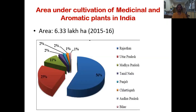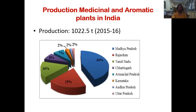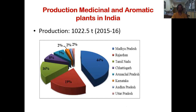Regarding area under cultivation of medicinal and aromatic plants, around six lakh hectares have been cultivated in our country. State-wise, Rajasthan is the major player with about 56% of the area, followed by Uttar Pradesh, Madhya Pradesh, Tamil Nadu, Punjab, Chhattisgarh, Andhra Pradesh and Bihar. In terms of production, around 1,022 metric tons was produced in 2015-16, with the major source from Madhya Pradesh, followed by Rajasthan, Tamil Nadu, Chhattisgarh, Arunachal Pradesh, Karnataka, Andhra Pradesh and Uttar Pradesh.